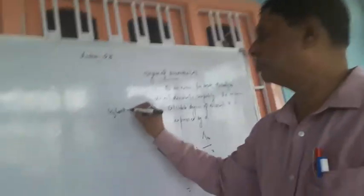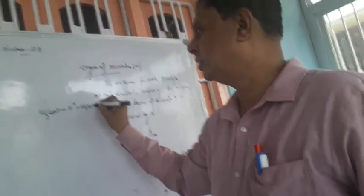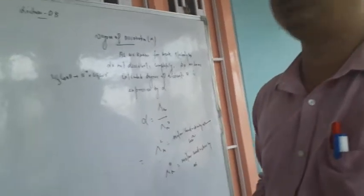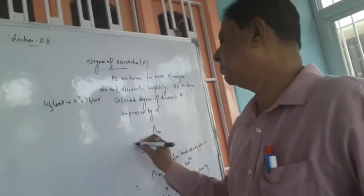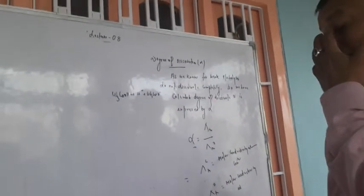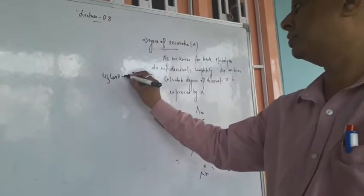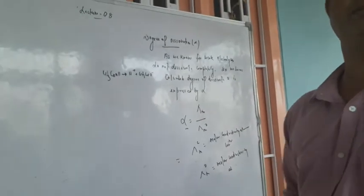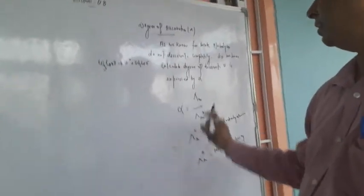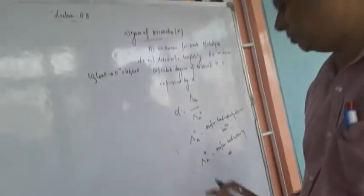Acetic acid does not dissociate completely into H+ or acetate ions, so we have considered the degree of dissociation, that is known as alpha, which multiplies with concentration. Alpha is equal to λm upon λm standard.